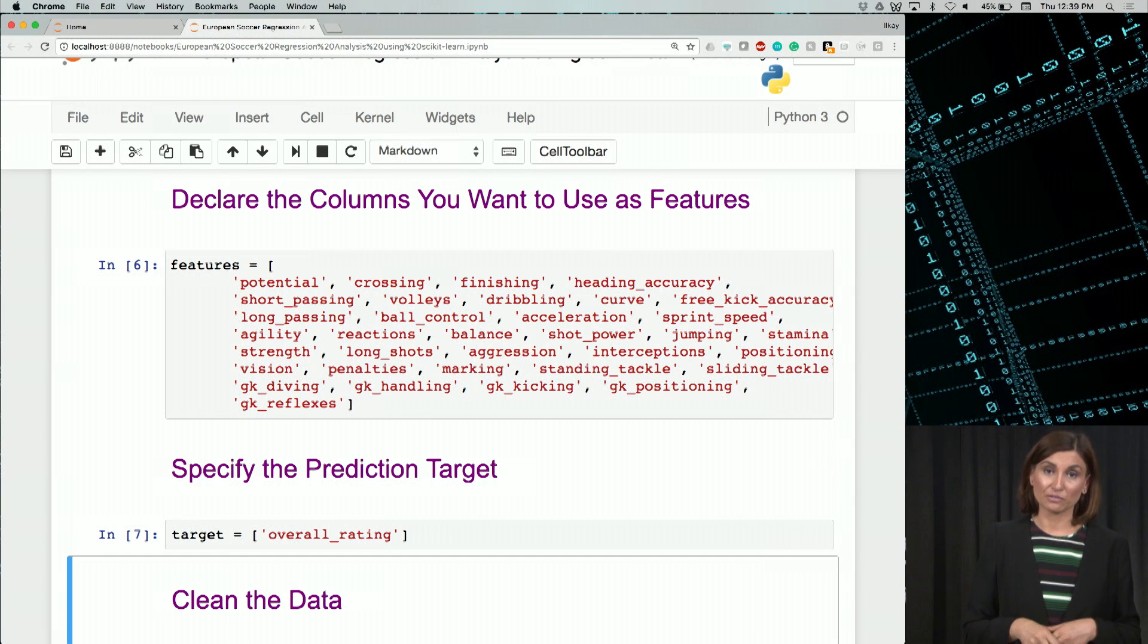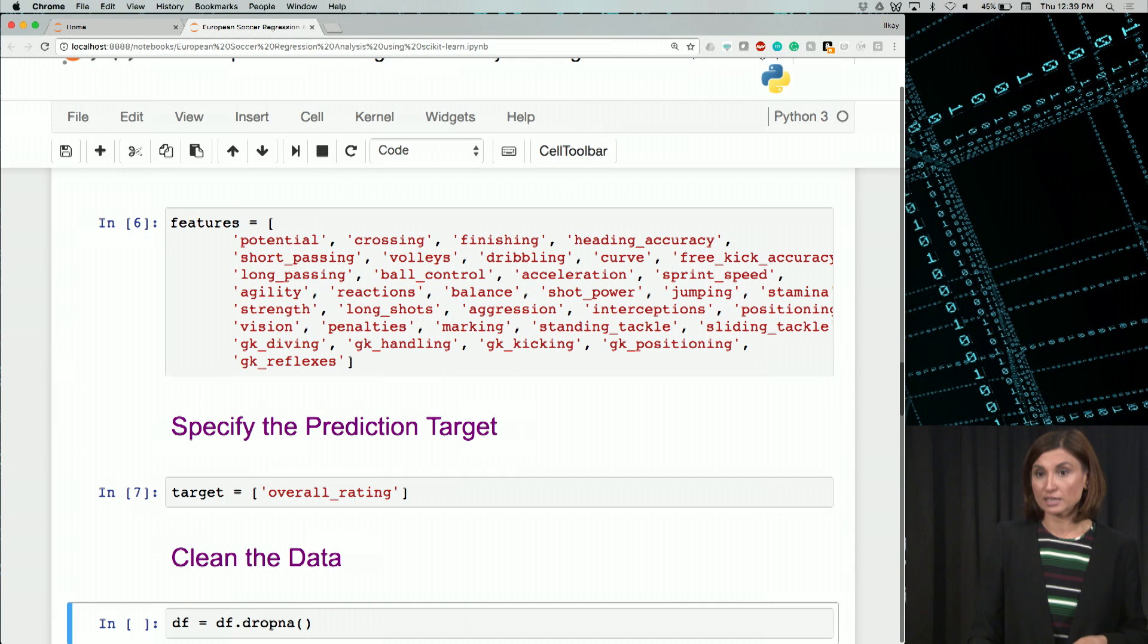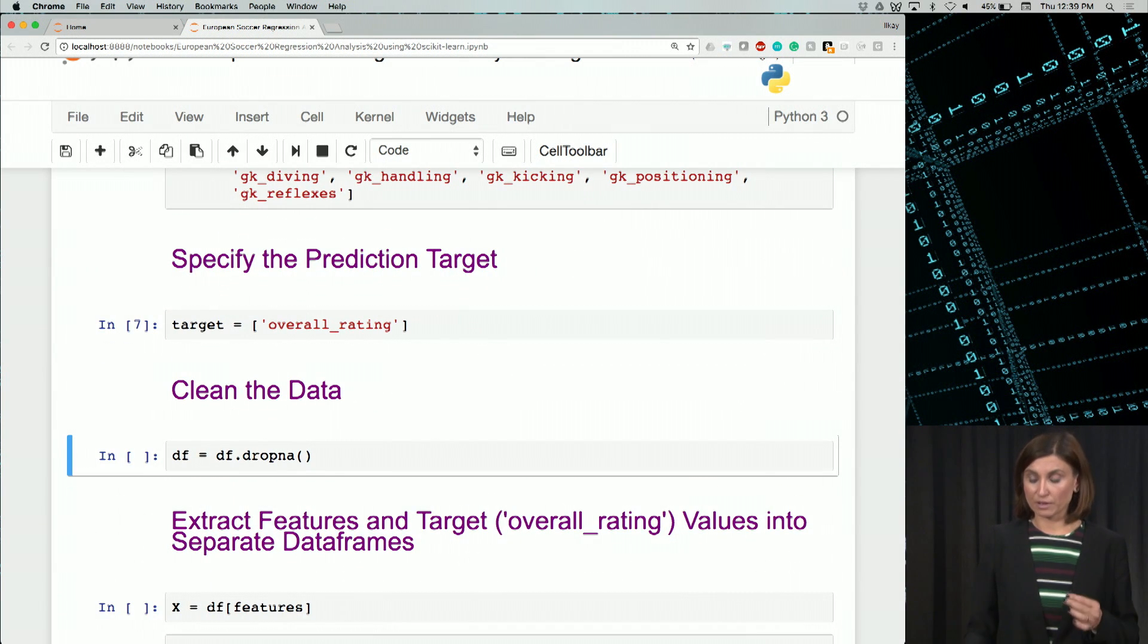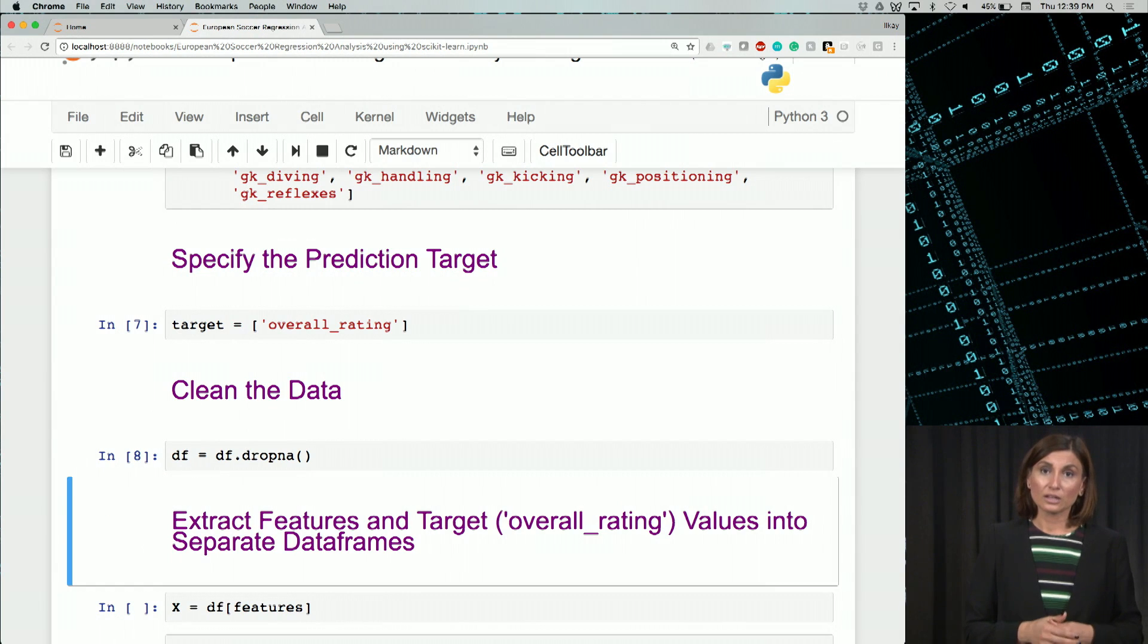As we know from week one, this is an issue with this data set. We'll use the data frame and say df.dropNA. Now we have a slice of the data that doesn't have null values.